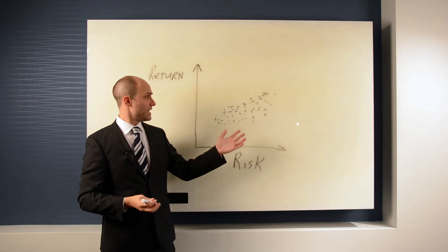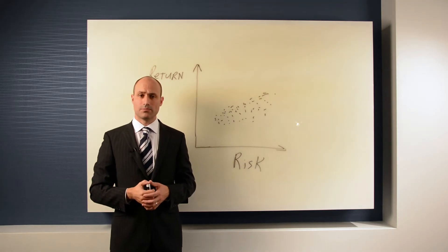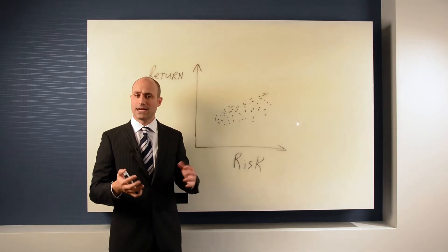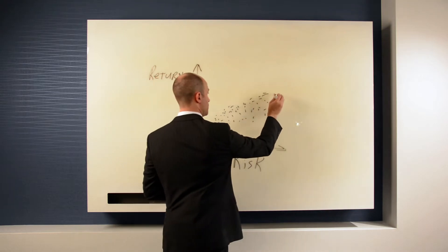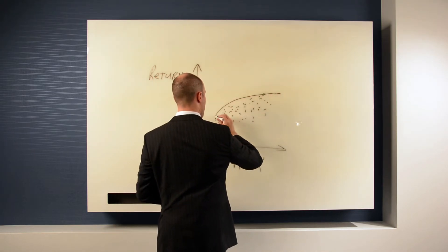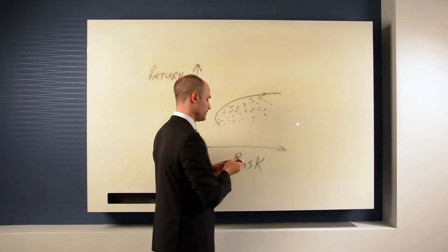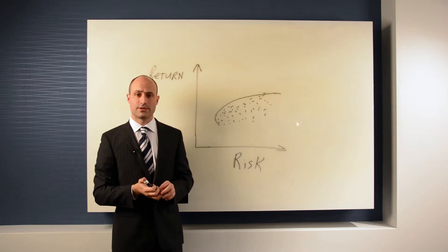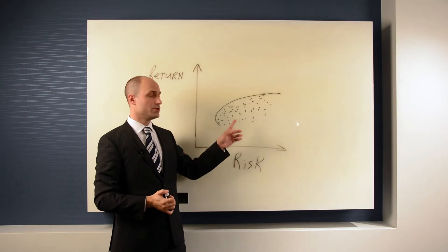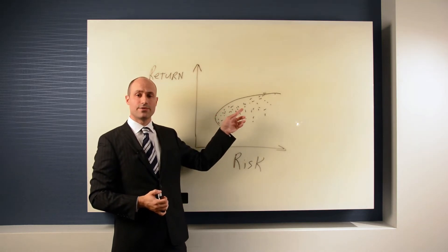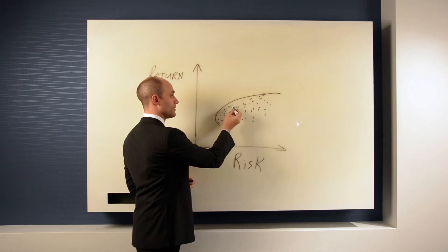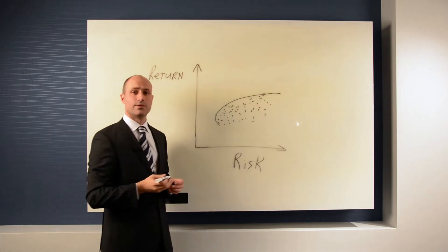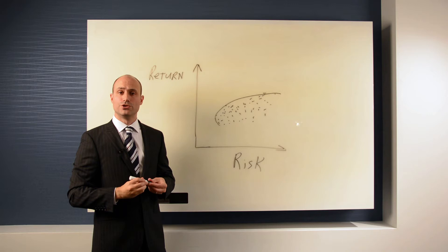Now once we have all of the investments in the world plotted, we can actually create what's called the efficient frontier. It's called the efficient frontier because you always want a portfolio that's on the frontier. For example, if you have this investment or this one, which one would you choose?